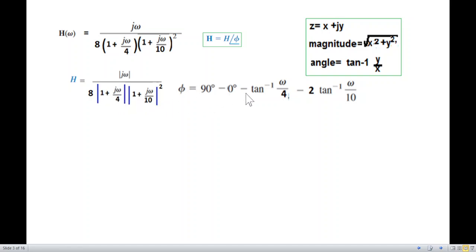So we have tan inverse omega over 4, and for 1 plus j omega over 10 squared, it's double angle, so 2 times tan inverse omega over 10. This is the phase angle.